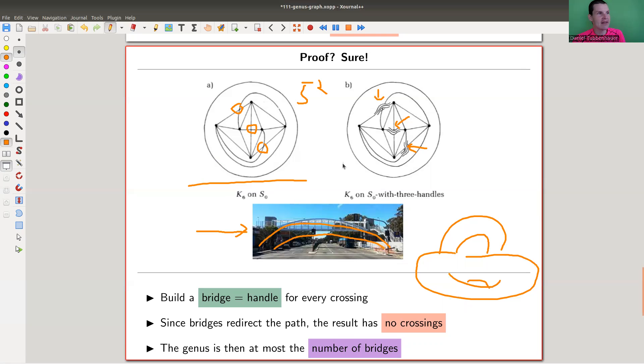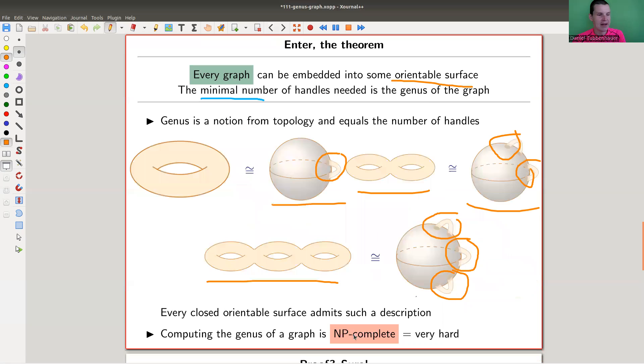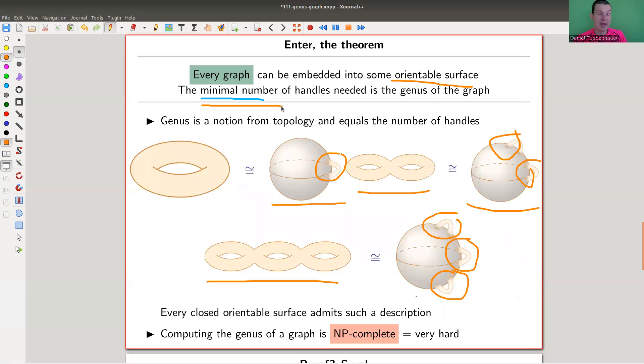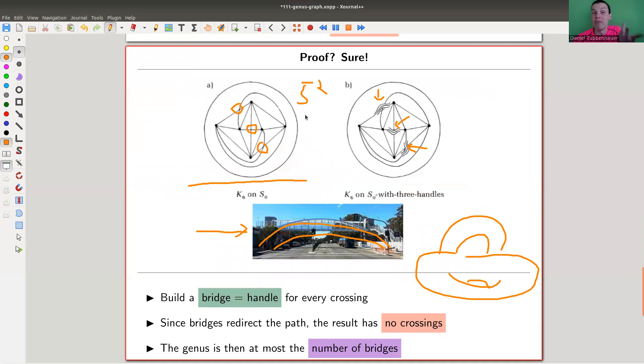Sadly, I said before that this is NP-complete, so it should be very hard. This looks very simple to me. The problem is you don't find the minimal genus, the minimal number, but you just find some number. But still it proves the theorem because the number you want will be something smaller.